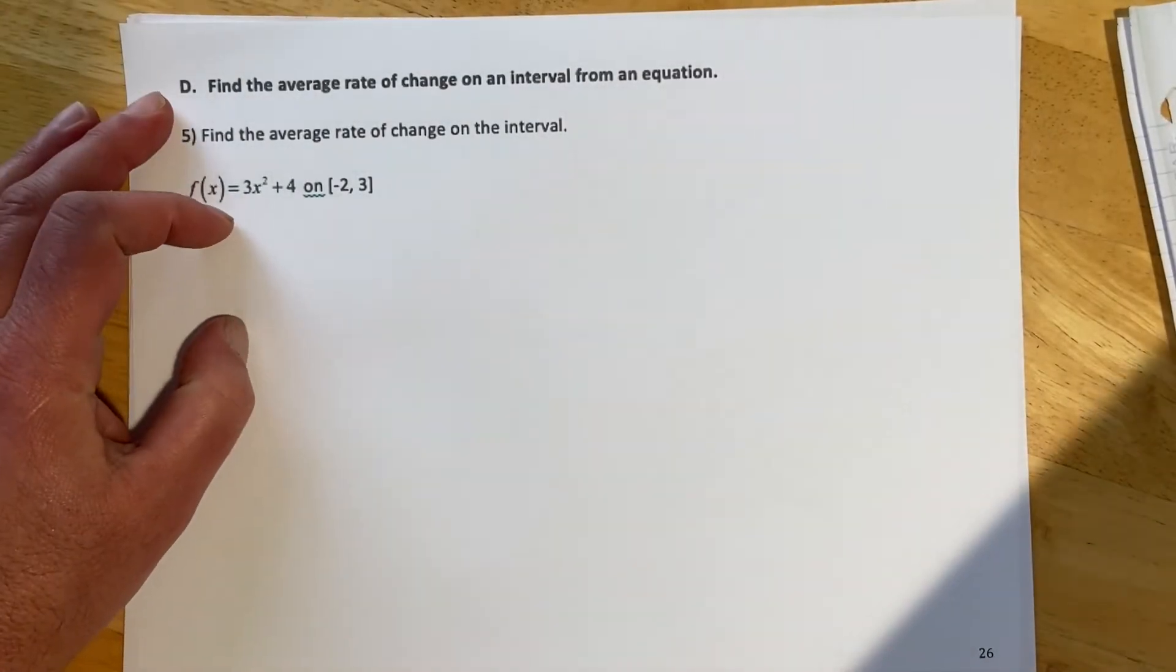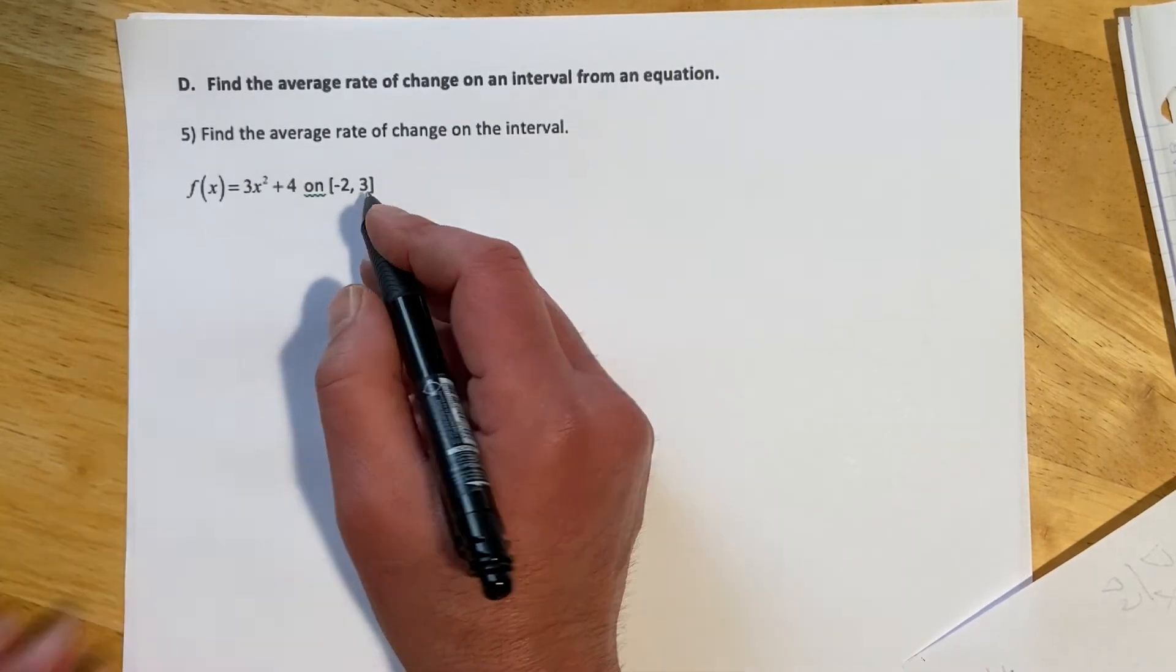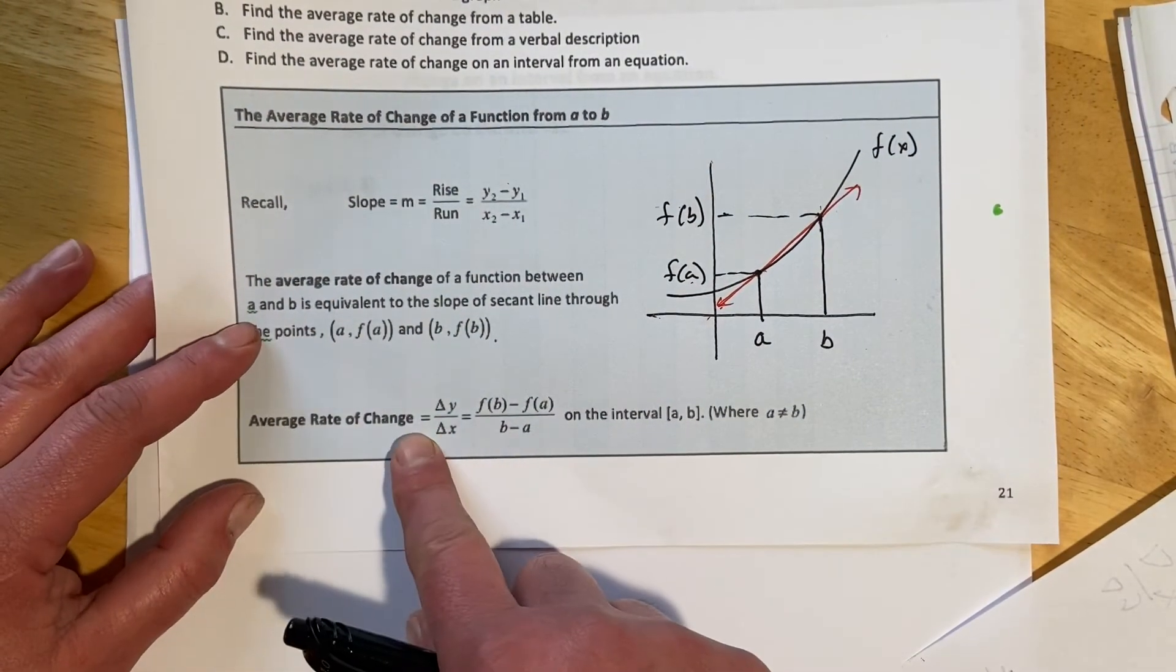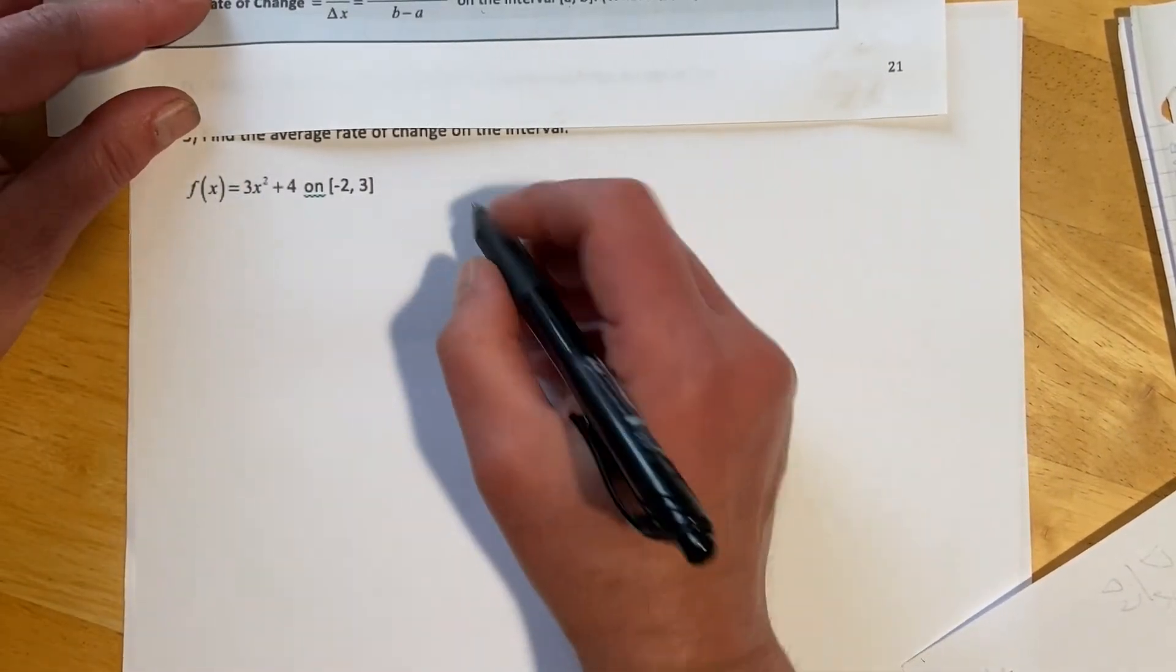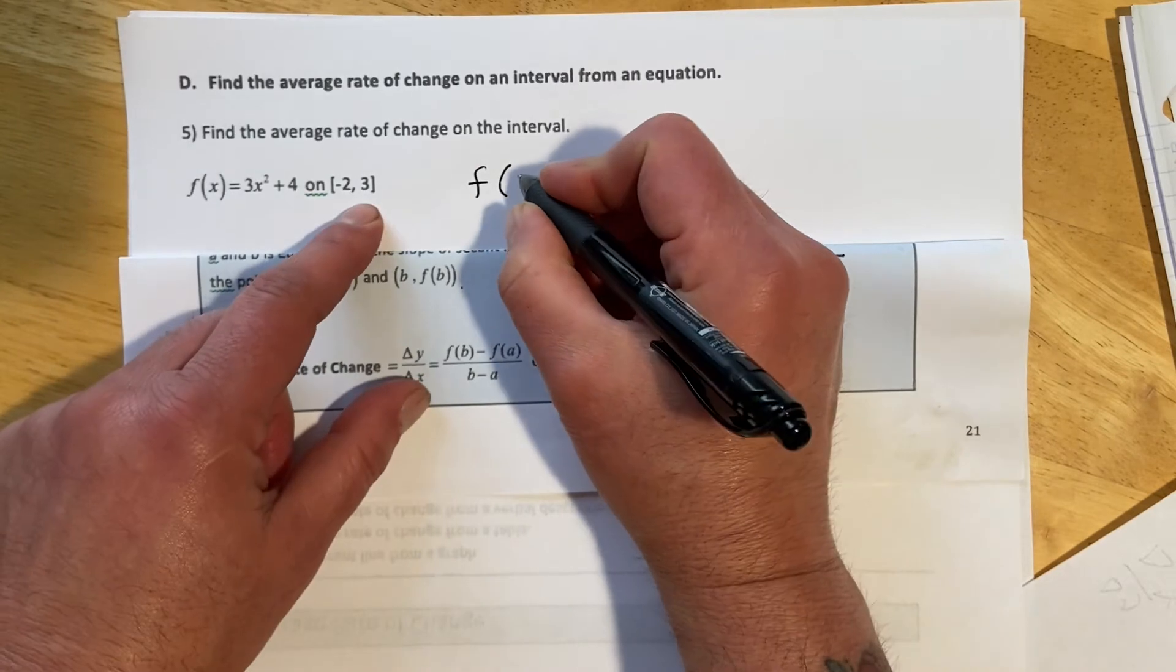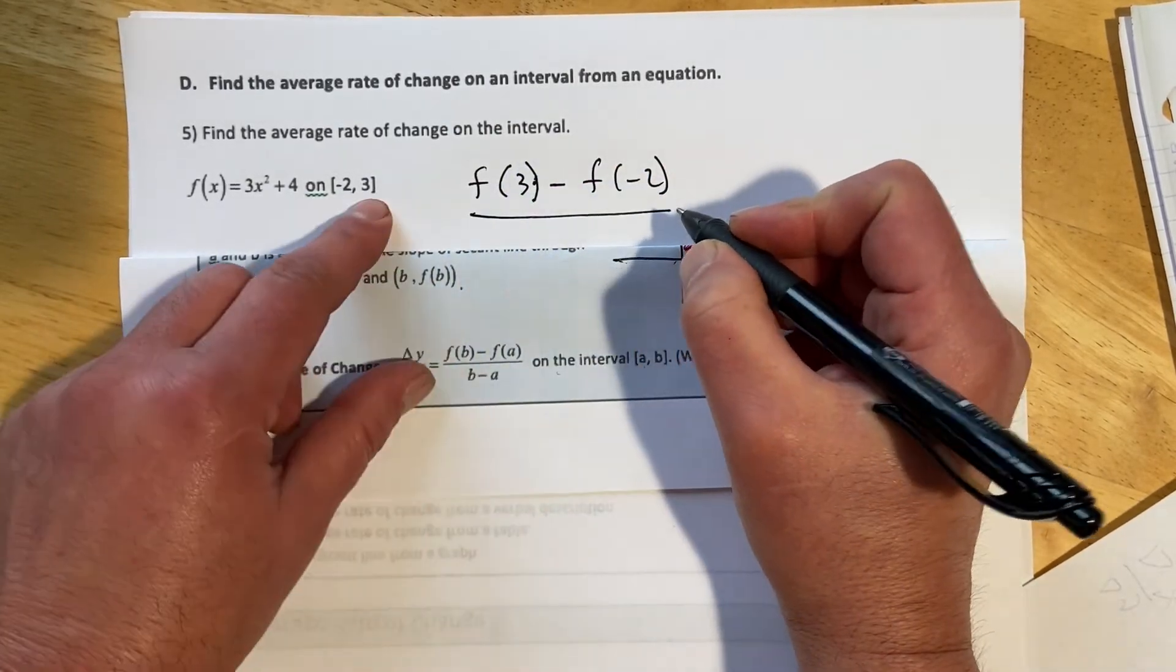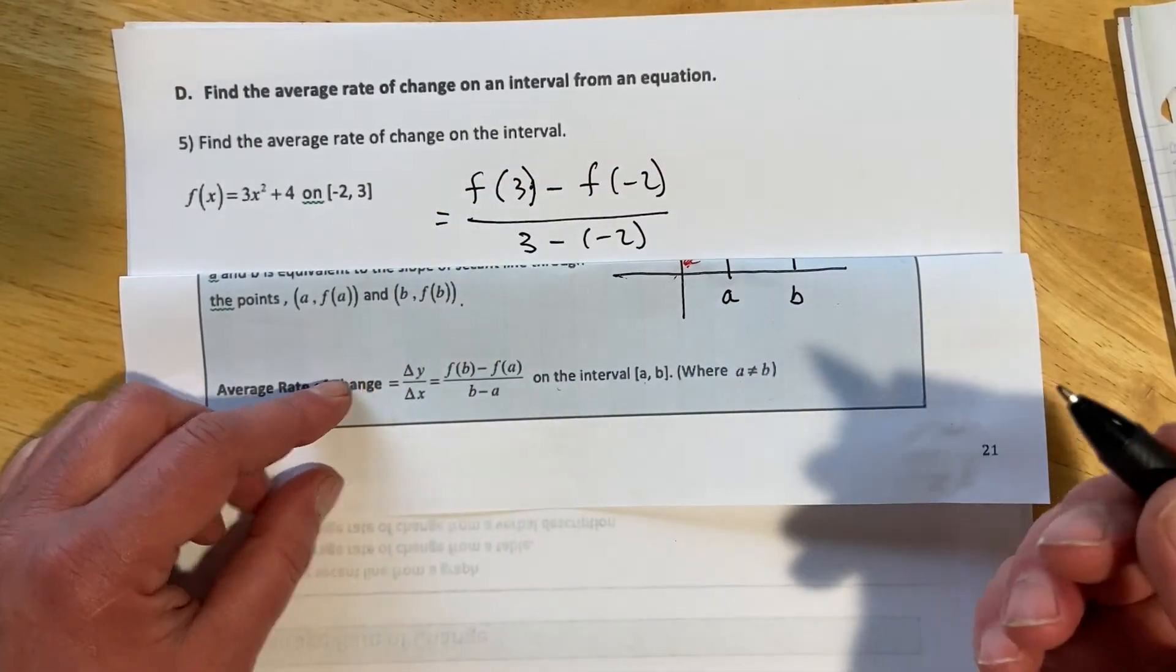Okay, this next example, find the average rate of change on the interval from an equation. So this time we're actually given an F of X, and we're asked to find it over this interval. And so here, I'm going to bring back this more formal definition. So average rate of change, F of B minus F of A over B minus A on the interval A, B. So here we would have to find F of 3 minus F of negative 2 over B, so that's 3 minus negative 2. So that's our goal to find our average rate of change.